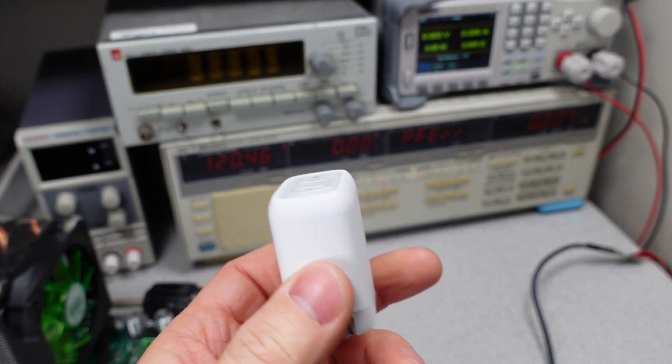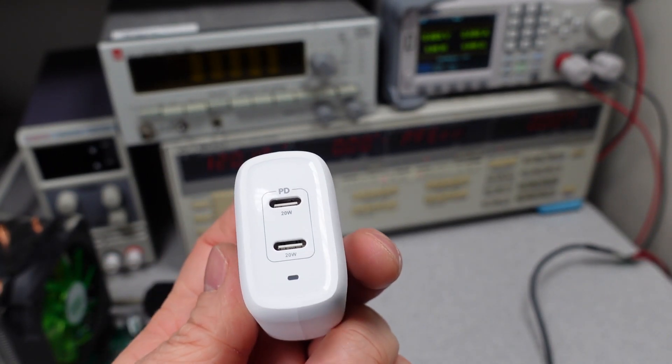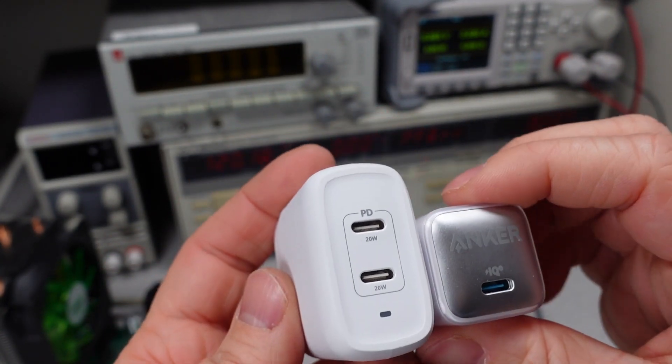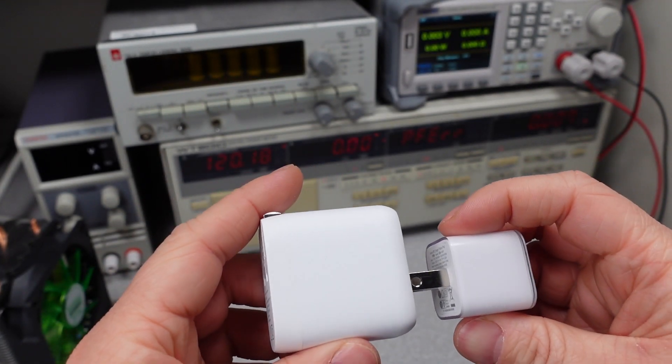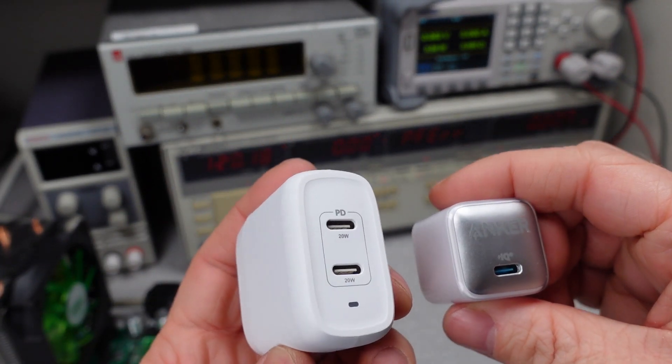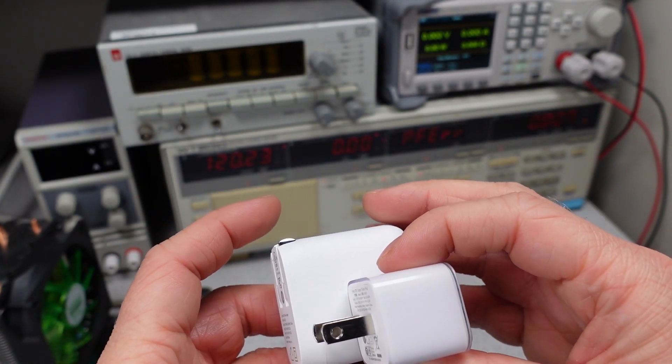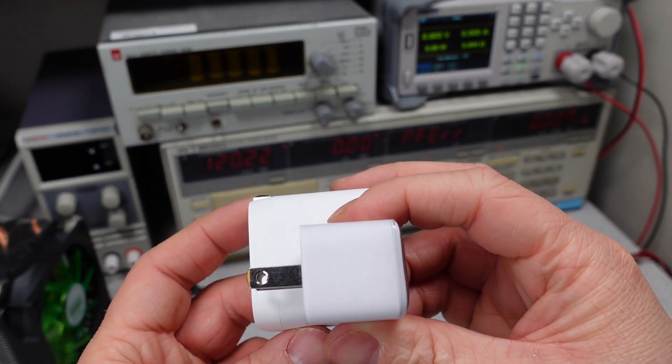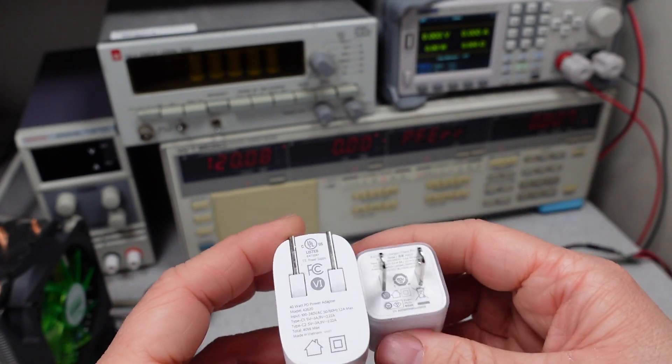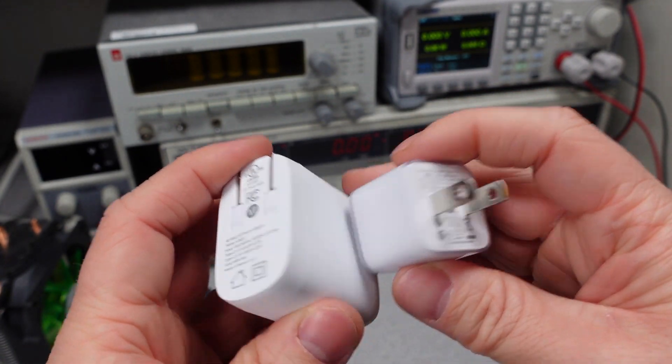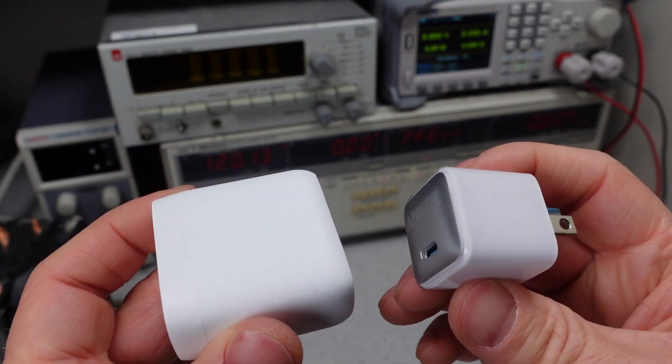So overall, the power adapter is not too bad. It's essentially two 20-watt power adapters glued together. So here's a single 20-watt adapter, the Anker Nano Pro, just as a comparison. And you can see it's quite a bit bigger than two of these, I'd say. But not a huge difference, really. So essentially, two power adapters in one.